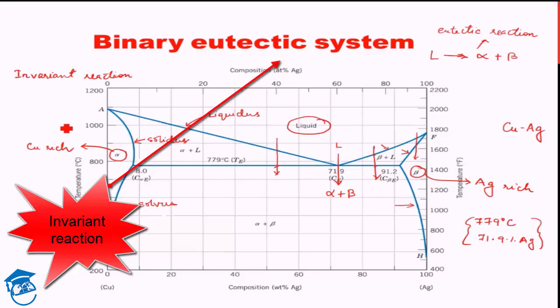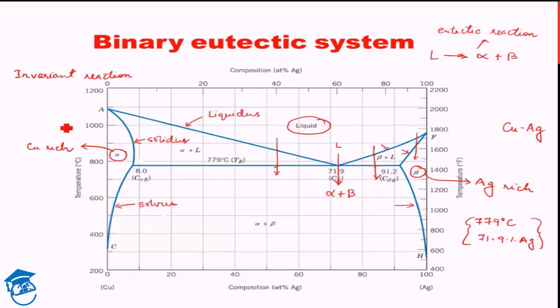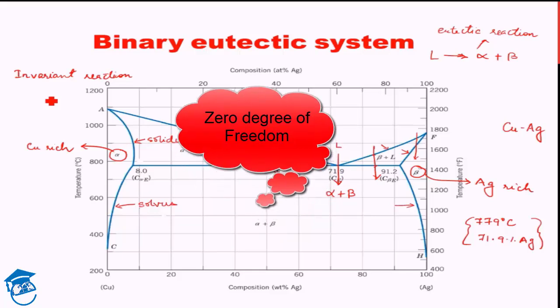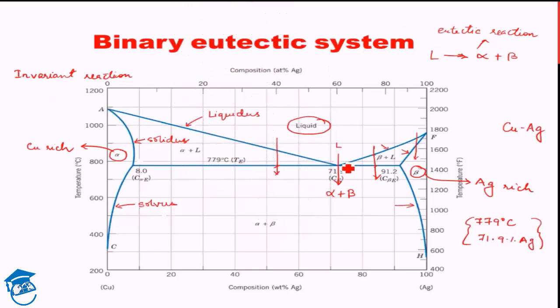Such reactions have zero degrees of freedom — you do not have any choice over the parameters at which the reaction takes place. It is a fixed-condition reaction. The fundamental characteristic is liquid converting to two solids simultaneously. Now, how exactly does a single liquid form two solids?